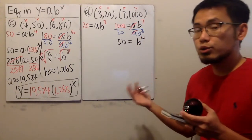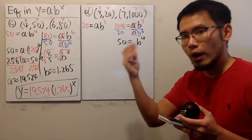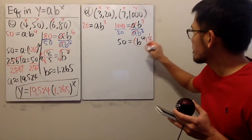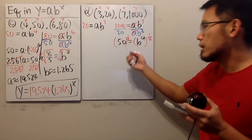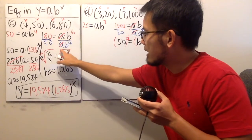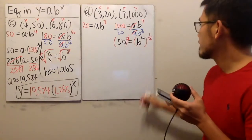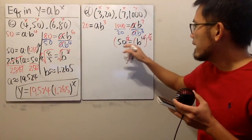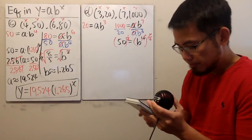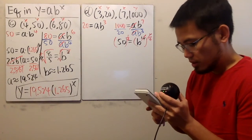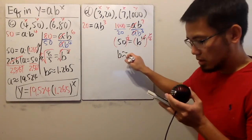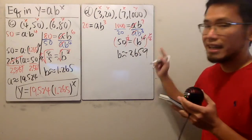We can just do the 1 over 4 power, or the 4th root — up to you. I'll do the 1 over 4 power because it's easier to enter. Taking the positive number only, 50 raised to the 1 over 4 power gives b approximately equal to 2.659.